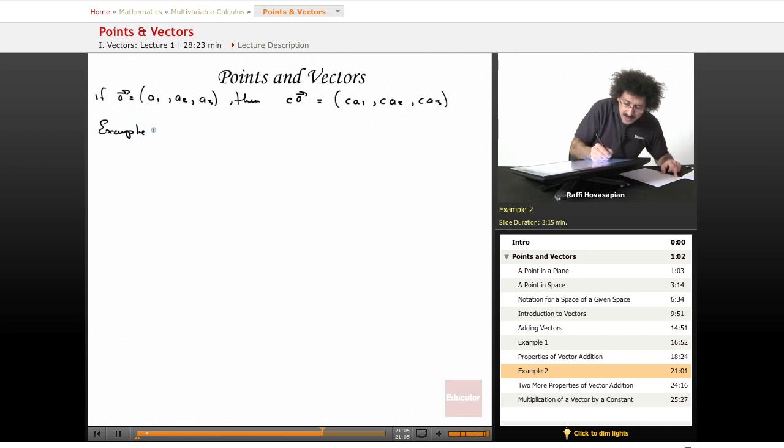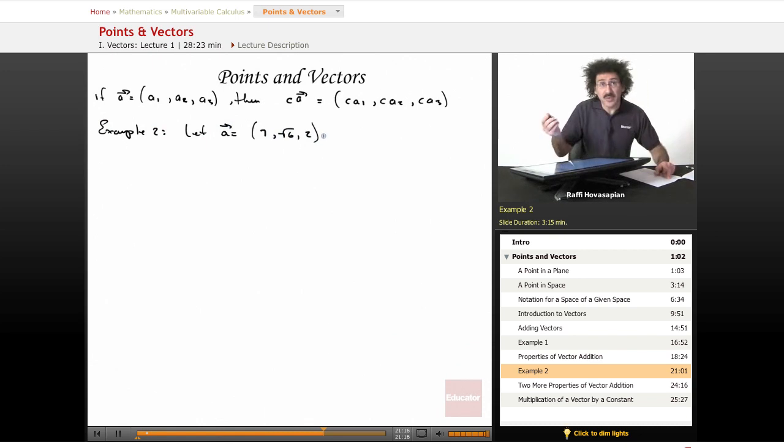Let's do another example real quickly. Example number 2, we will let A equal 7, radical 6, 2. And you see real numbers, they don't have to be integers, they can be any number at all.